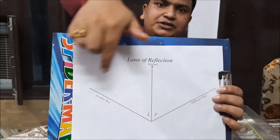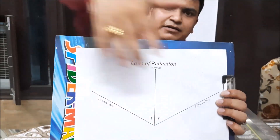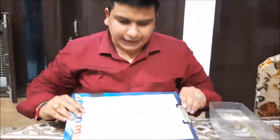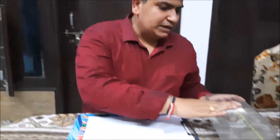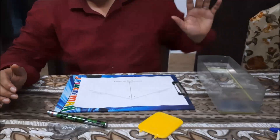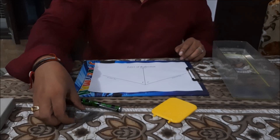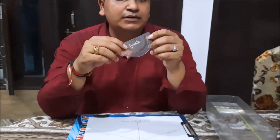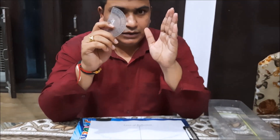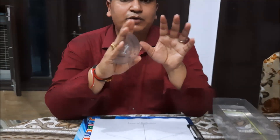Here you can see something written over there — the laws of reflection — and some arbitrary lines are taken as incident and reflected rays. We also have a transparent long tumbler filled with water. This is the setup required for this experiment, along with a protractor for measuring the angles of the incident ray and reflected ray with respect to the normal.